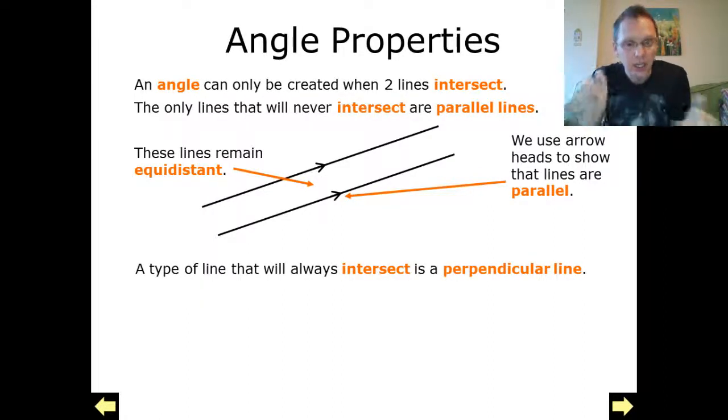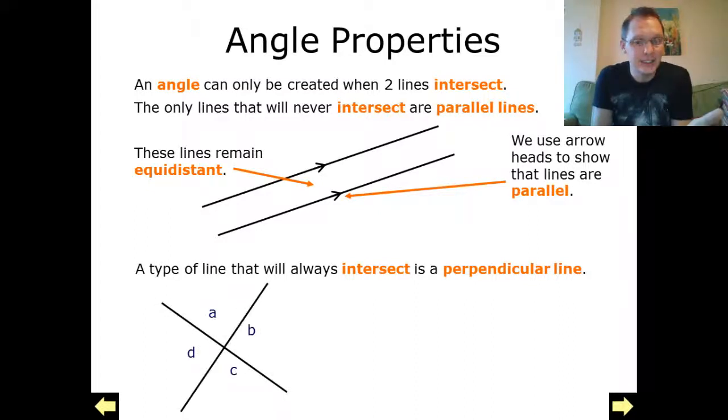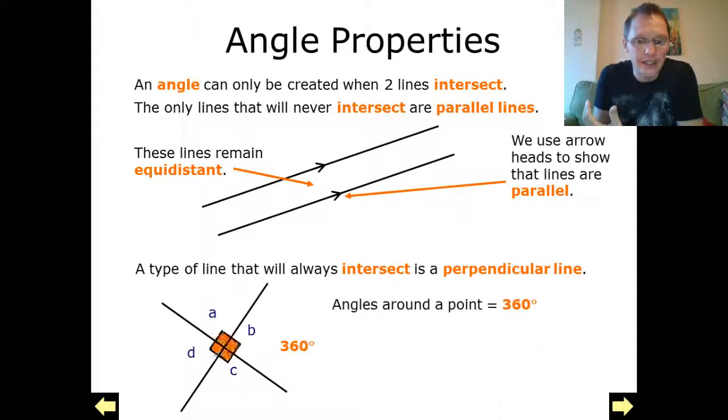So a type of line that will always intersect is a perpendicular line. Of course, if the lines aren't parallel, at some point they will always intersect. But ones that do intersect are perpendicular lines. This is because they actually cross at 90 degree angles. They cross at right angles.